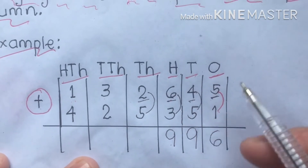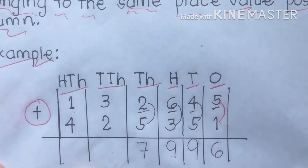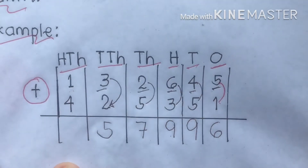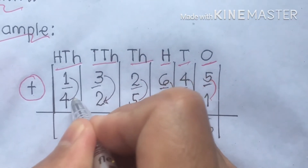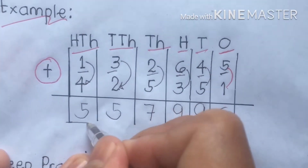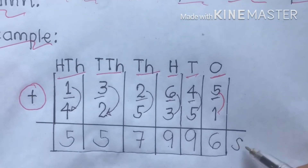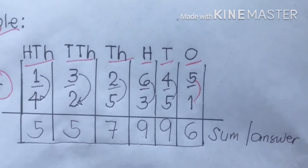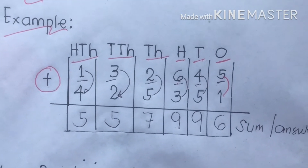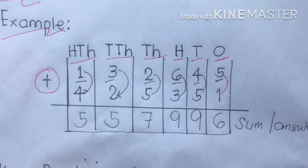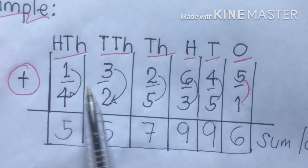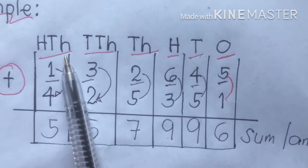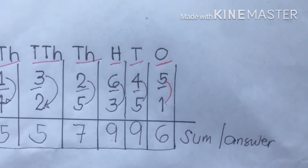Next, two joined together with five — we add, so we have seven. Next, three added to two, we have five. Next, one joined to four, we get five. That's how you add large numbers through this process. It's a long process because you're adding a large number — six digits up to the hundred thousands place value — but we are patient enough to answer one by one.